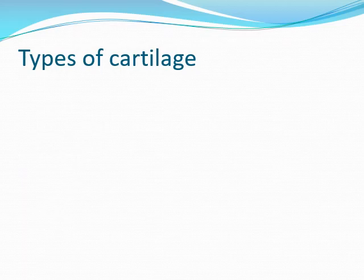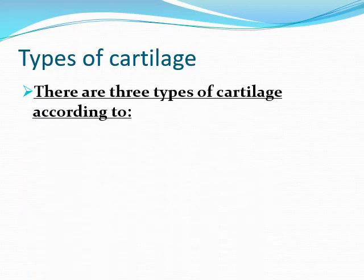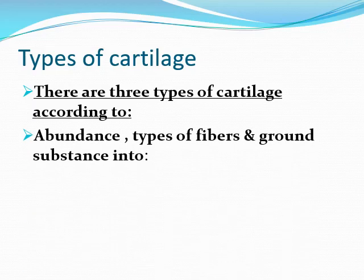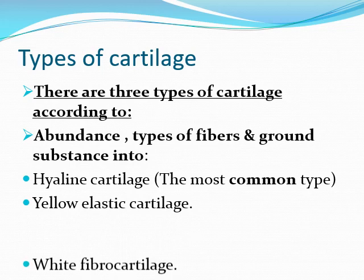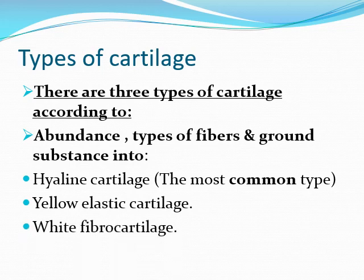There are three types of cartilage, classified according to the abundance and types of fibers and ground substance. We have hyaline cartilage, which is the most common, yellow elastic cartilage, and white fibrocartilage.